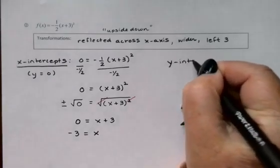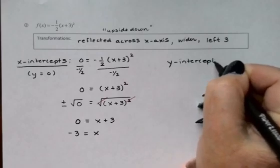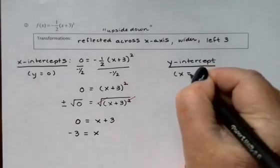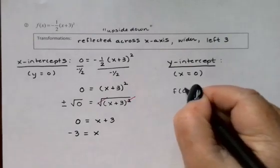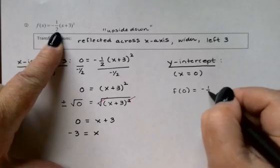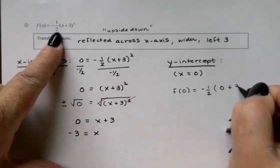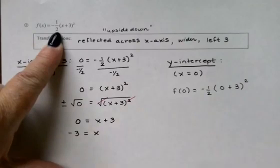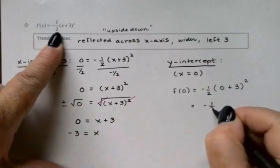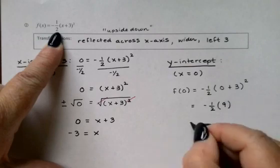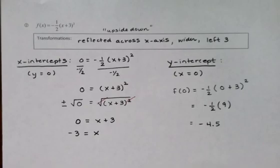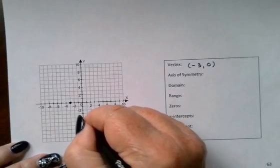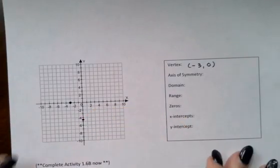All right. Let's do the y-intercept, putting in x = 0. So I will get -½(0 + 3)², or -½ × 9 is -9/2 or -4.5. So my y-intercept down here is at -4.5.